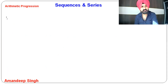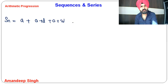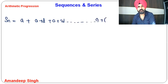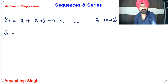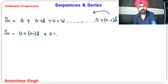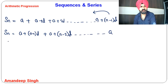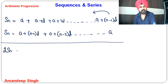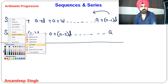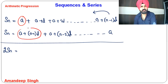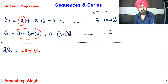Now we have to find the sum. Term number 1 is A, term number 2 is A plus D, term number 3 is A plus 2D, and so on. The last term is A plus N minus 1 into D. To derive the formula, if we write SN in forward order and then in reverse order and add them, every pair gives the same summation. The first and last term give 2A plus N minus 1 into D.